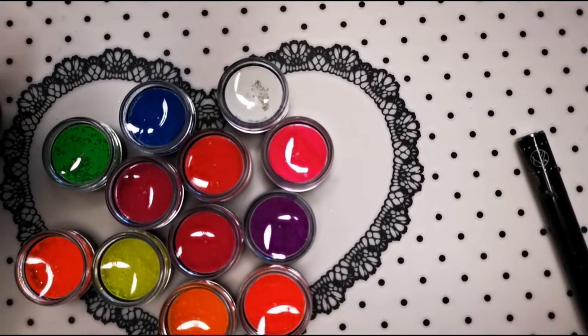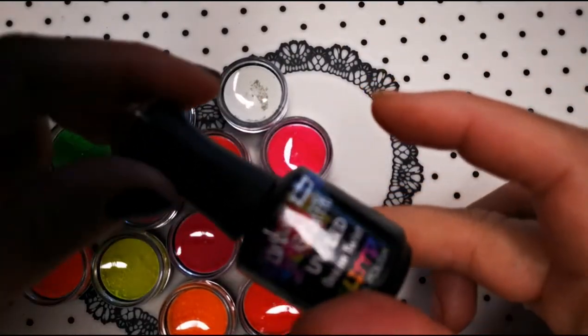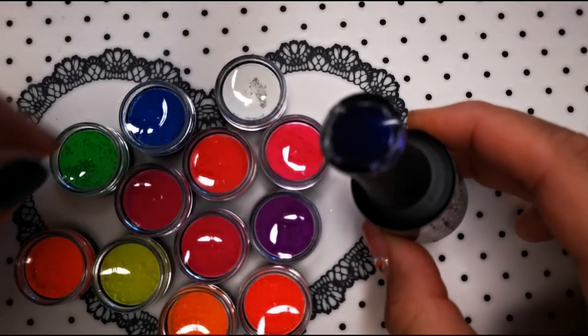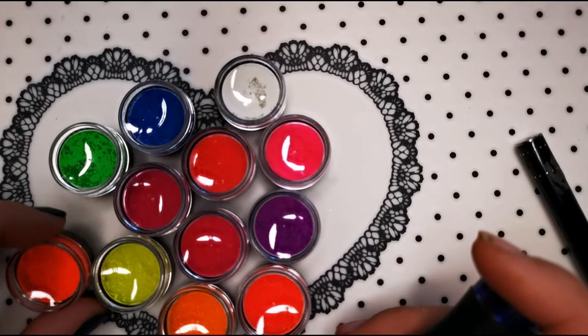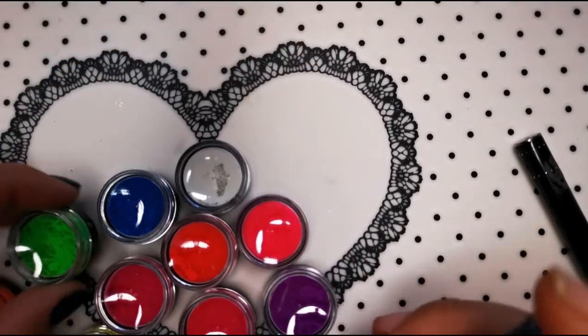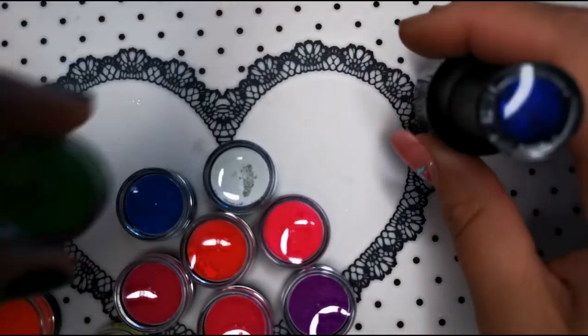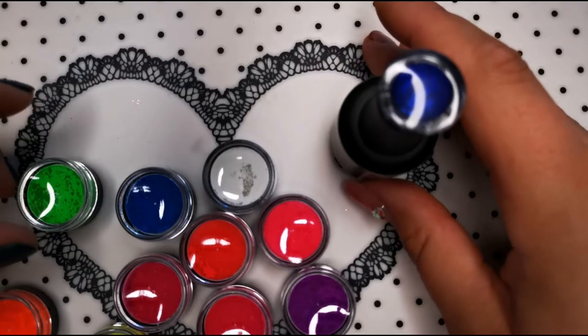Usually you'll see that when people do them, they do them on a black background, but I've decided to do mine on a dark metallic blue. This is gel polish from NAO. Looking at these colors, I think I'm going to choose green. I think that will look cool together.